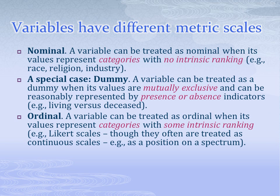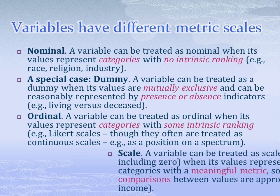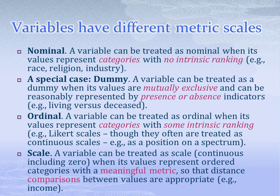The second type of variable is called ordinal. Ordinal variables do have some intrinsic ranking and are often captured using Likert scales. And the third type of variable is called scale. Scale variables include continuous values that can be meaningfully compared — for example, income. Each of these variables will now be given a little bit more attention.